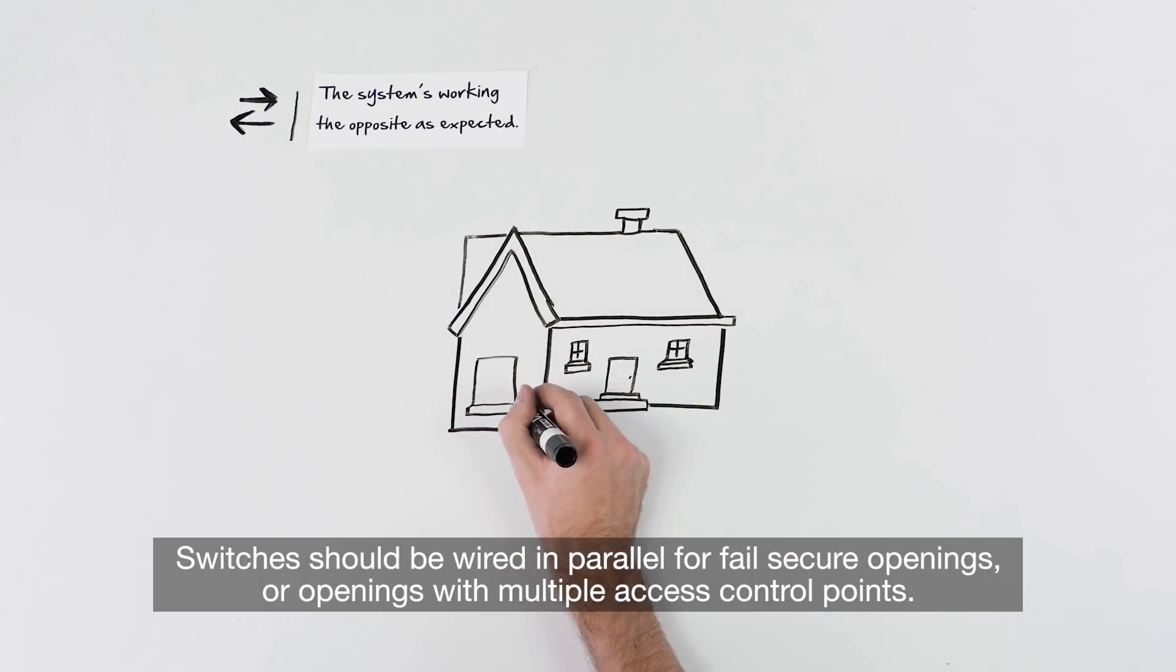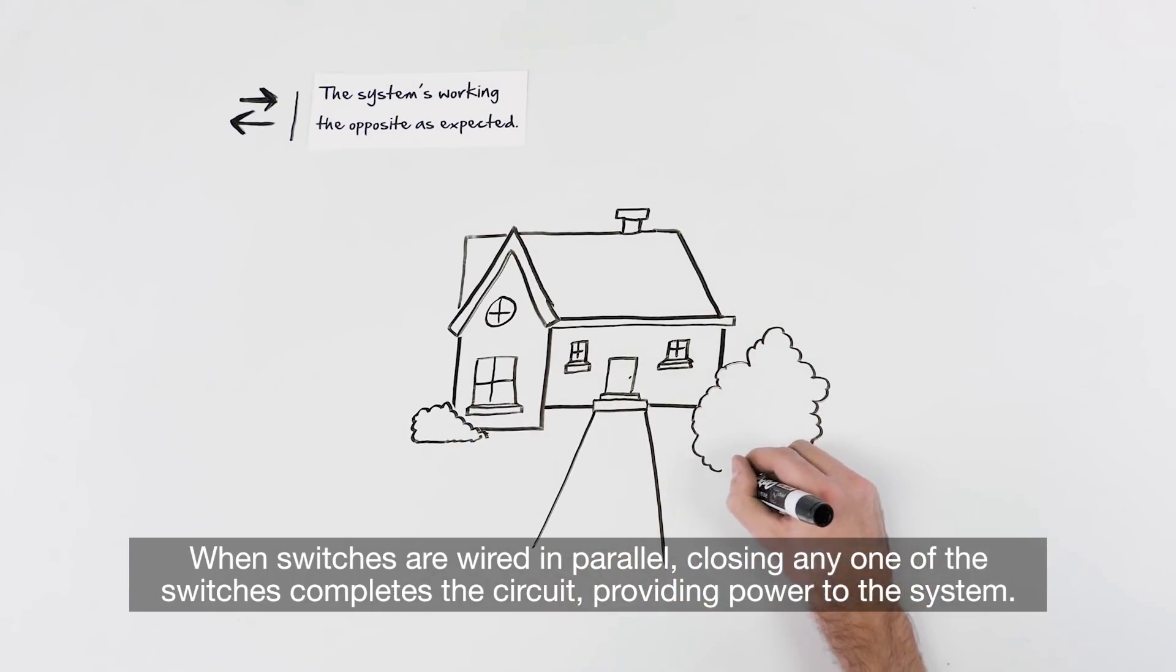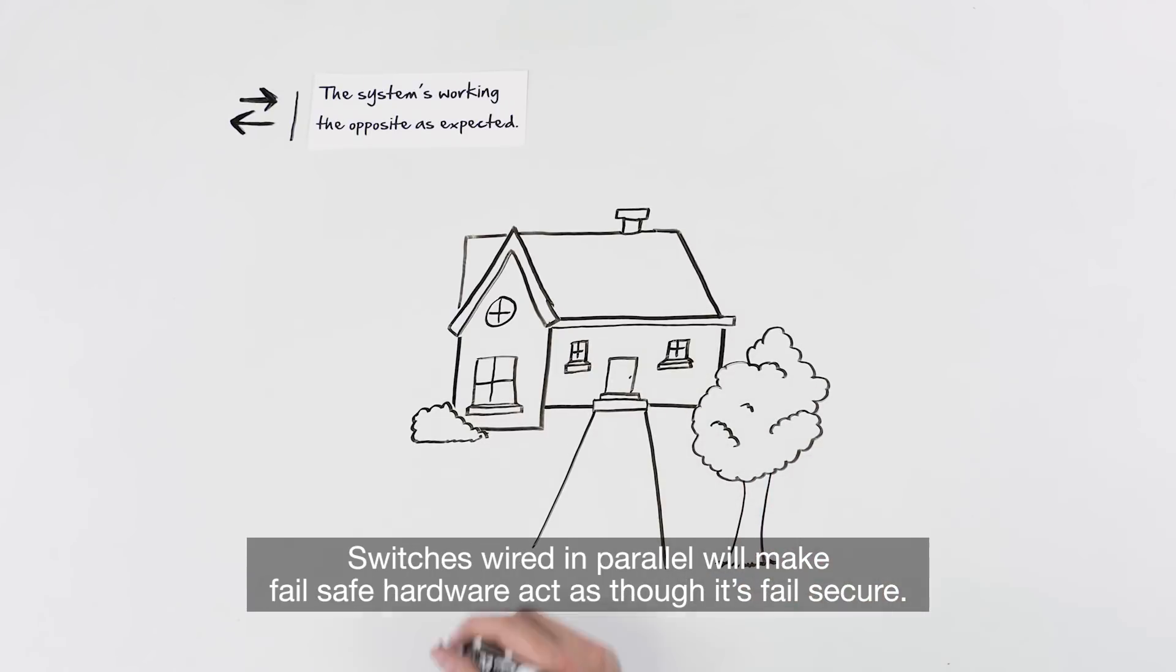Switches should be wired in parallel for fail-secure openings, or openings with multiple access control points. When switches are wired in parallel, closing any one of the switches completes the circuit, providing power to the system. Switches wired in parallel will make fail-safe hardware act as though it's fail-secure.